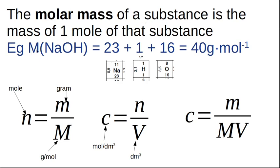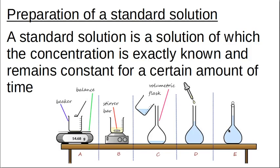The molar mass is the mass of one mole of a substance — you find it from the periodic table. The number of moles is given by the mass in grams divided by the molar mass from the periodic table. Concentration is the number of moles per unit volume, usually cubic decimetres or litres — one cubic decimetre equals one litre. We can also express concentration as mass divided by molar mass divided by volume.